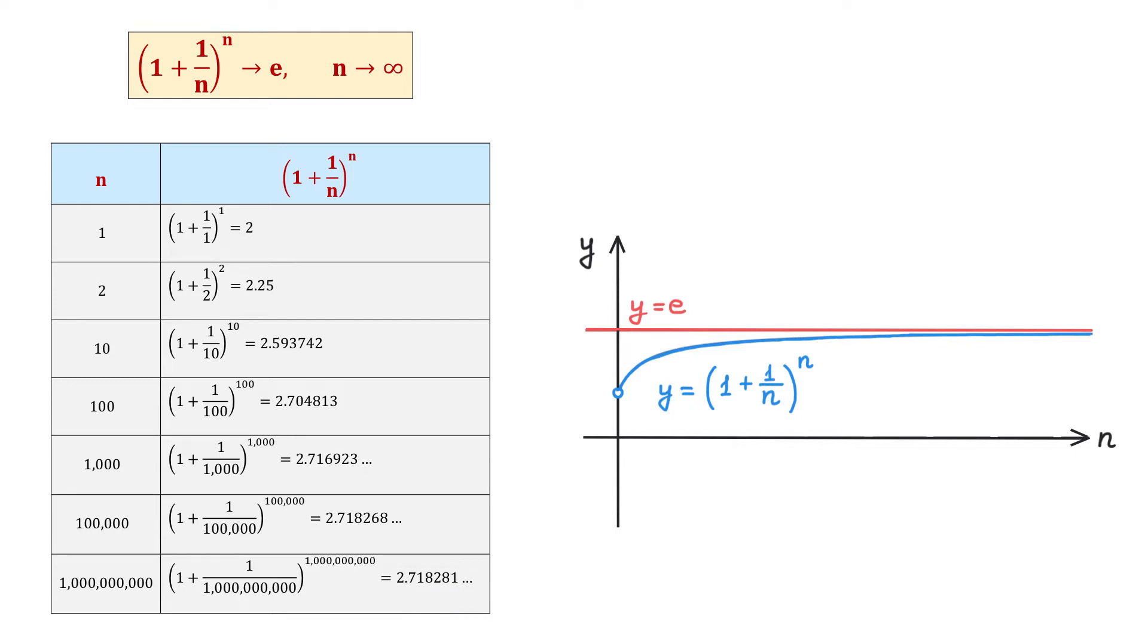Now, in the graph to the right, the red line represents the equation y equals e and it is horizontal because e is a constant.